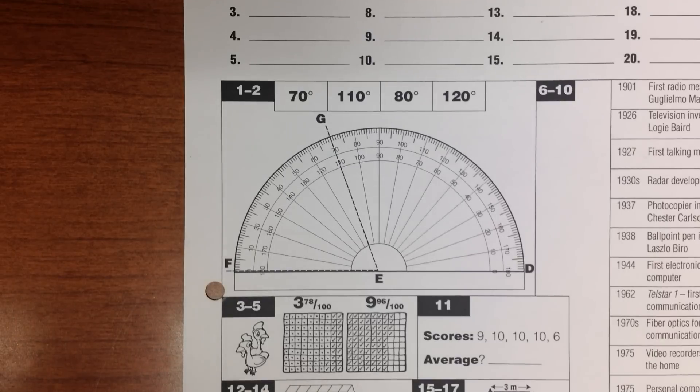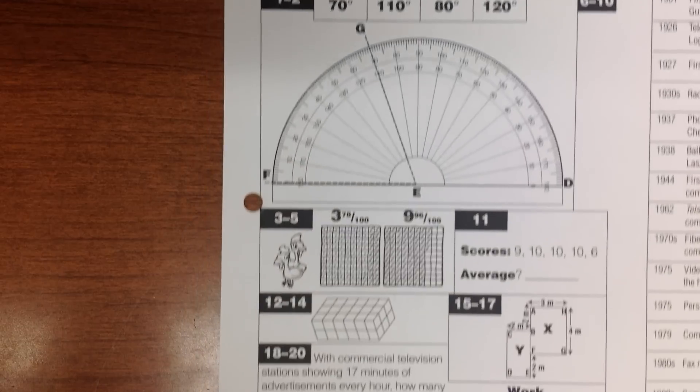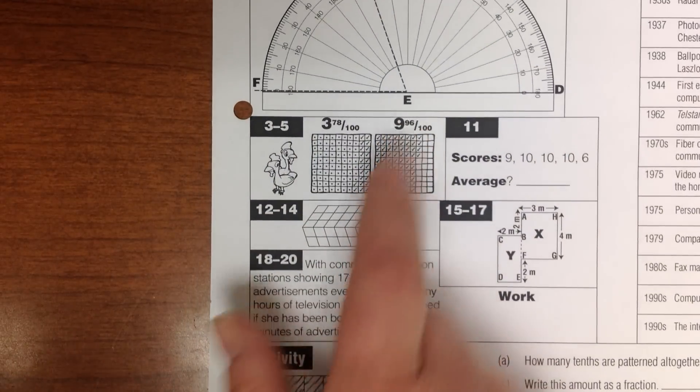Number 3. The next three questions are about the cake-eating chickens. Number 3.